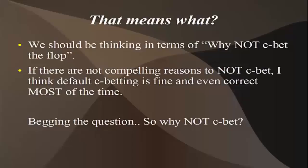What does that mean? At default, we should be making a continuation bet on the flop heads up, in position, when checked to by the preflop caller, a very large percent of the time. But I don't think we should be doing it 90 or 100 percent of the time. We should be thinking in terms of: why should I NOT c-bet the flop? And if we can't think of any good reasons, then we should be c-betting the flop. You could do a lot worse than c-betting 100 percent of the time, but you could do a lot better — that's what this video series is about.